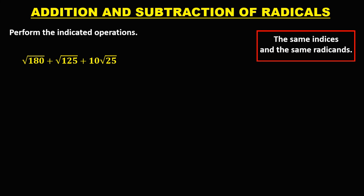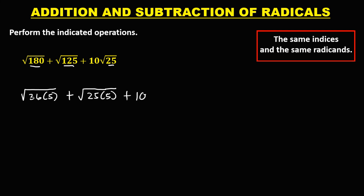For this next given, we need to rewrite the expression first. For √180, that's √(36 × 5), then plus √(25 × 5), then plus 10 times √25. The square root of 25 is 5. To simplify: the square root of 36 is 6, so we have 6 times √5, then plus 10 times 5, which is 50.